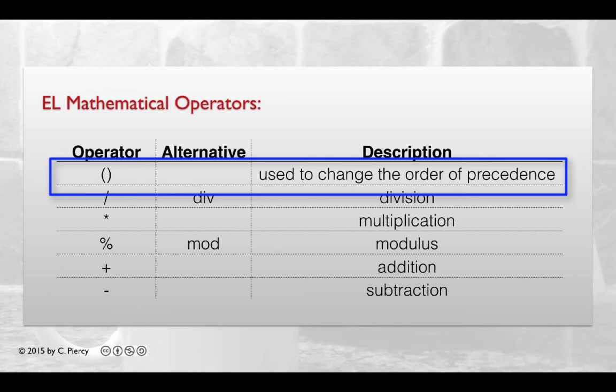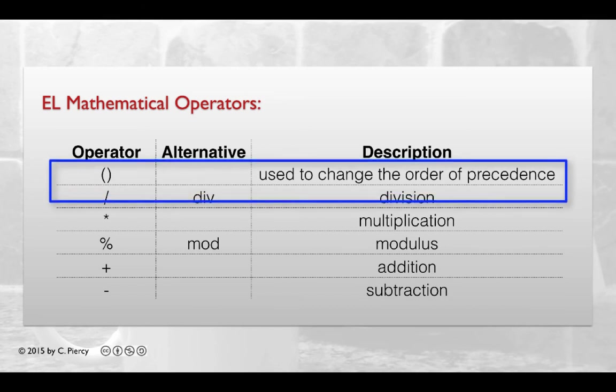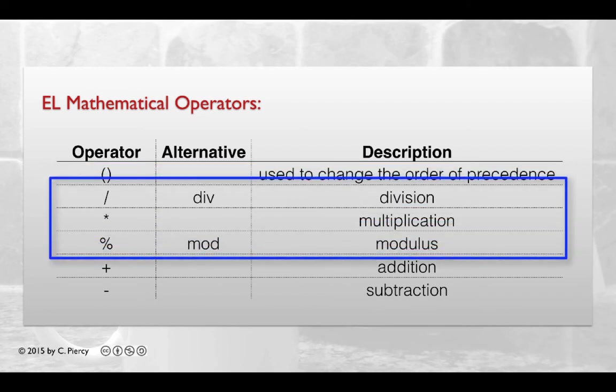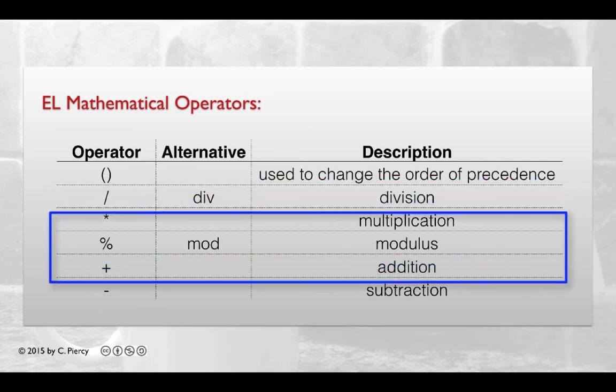In terms of precedence, the parentheses would take first. It's used to change the order of precedence. So what's inside a parentheses will be handled no matter where it is in the expression before things that are outside of those parentheses. Next, division, multiplication, and modulus take equal precedence. They will be handled in the order from left to right.